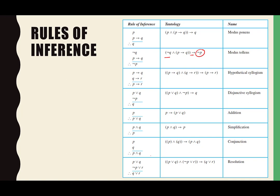These rules of inference happen to have one or two premises. Some have only one premise, some have two. You can have situations with three, four, five, or a dozen premises. These are just some common ones you'll run into all the time when doing a proof — a little chart to help you remember what they are.